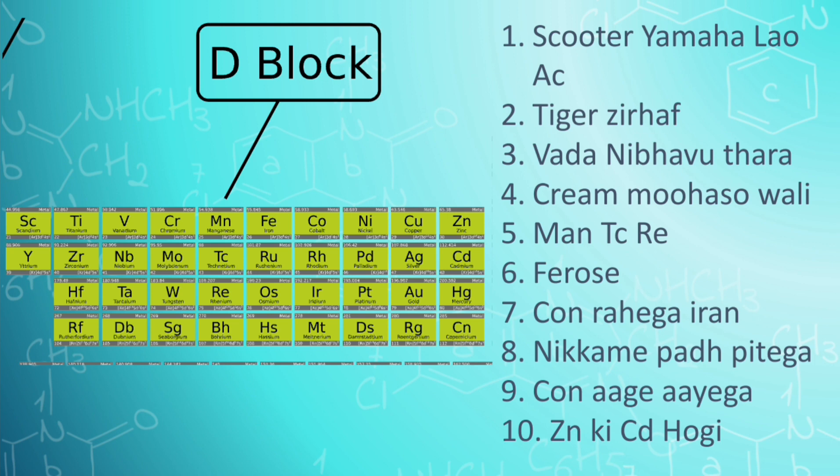Then the fifth group contains Vanadium, Niobium, and Tantalum. And the memorized trick for it is vada nibha uthara. Then chromium molybdenum and tungsten, and the memorized trick for it is cream moohaso wali.